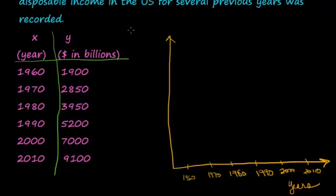So this is our disposable income in dollars and billions. I'm going to start down here at zero. I need to get past 9,000. So if this is 1,000, 2,000...